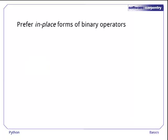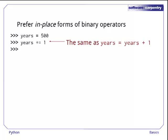Like other languages in the C tradition, Python allows you to use in-place forms of binary operators to make your programs more readable. For example, suppose we've assigned 500 to the variable years. If we write years plus equals 1, Python adds 1 to the value in years. It's exactly the same as writing years assigned years plus 1, but it's shorter and easier to read, particularly if the expressions involved are long or complicated. Sure enough, we've incremented years by 1.